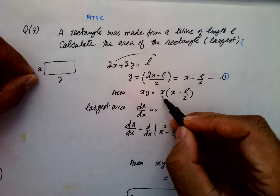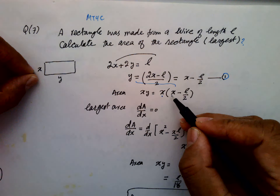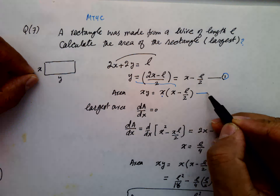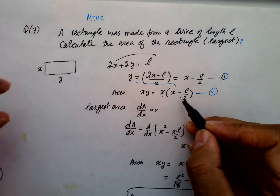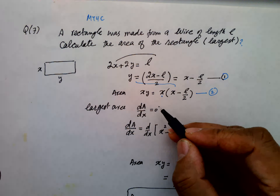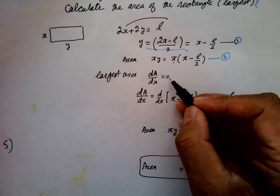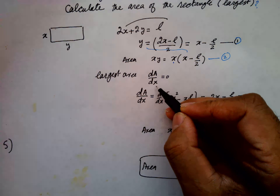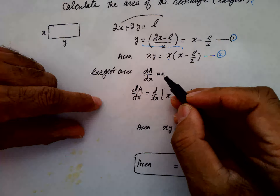So X multiplied by Y, where Y is this expression, gives X into X minus L over 2. This is equation number 2. So if the area is to be largest, we have to differentiate DA by DX. If it is equal to 0, then we find the value of X, and this X value will give us the maximum value.